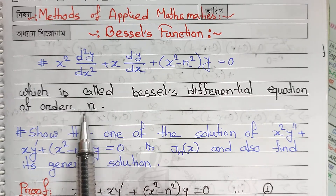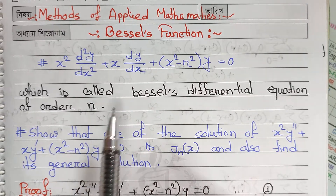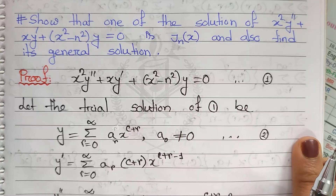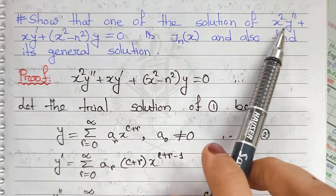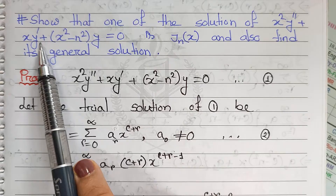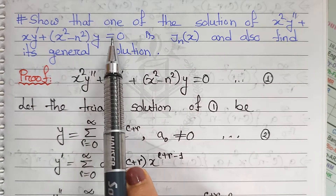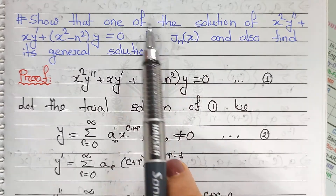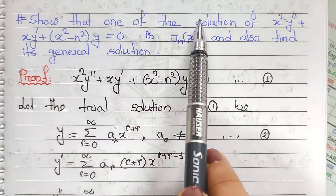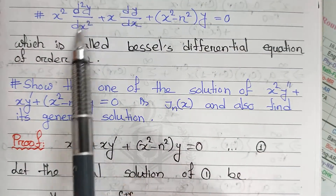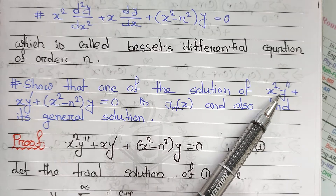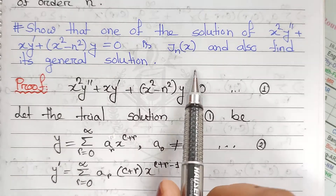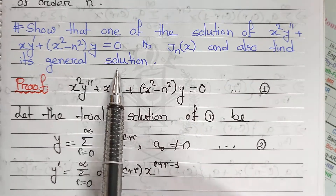This is the differential equation. This equation shows that one of the solutions is x² y'' + x y' + (x² - n²)y = 0. This Jₙ(x) is the solution of this differential equation. This equation shows that Jₙ(x) satisfies y double prime.